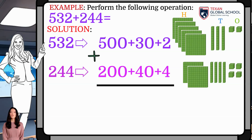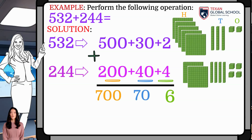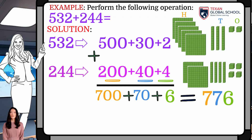Now, add each column: 1s, 10s, and 100s. 4 plus 2 is 6, 30 plus 40 is 70, and 500 plus 200 is 700. Adding directly 700 plus 70 plus 6, thus obtaining 776.